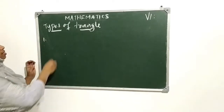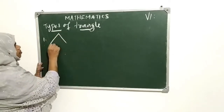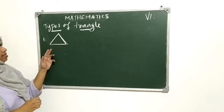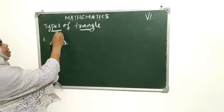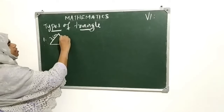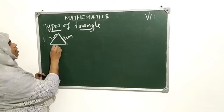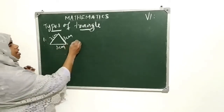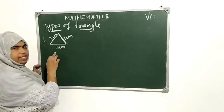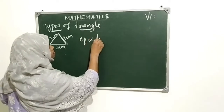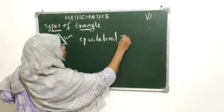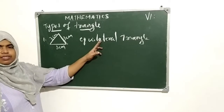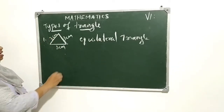First one: see this triangle — three sides and three angles. This side is three centimeters, this also three centimeters, and the third side also three centimeters. That means the three sides are equal, so this triangle is called an equilateral triangle. Equi means equal, lateral means sides — equilateral triangle.